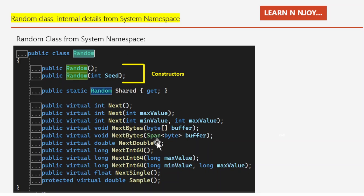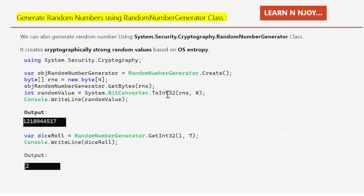So we can use either the parameterless or parameterized constructor and these many methods. These are the internal details of the Random class available in the System namespace, which we can use in our applications.